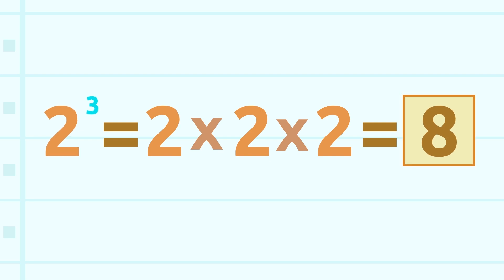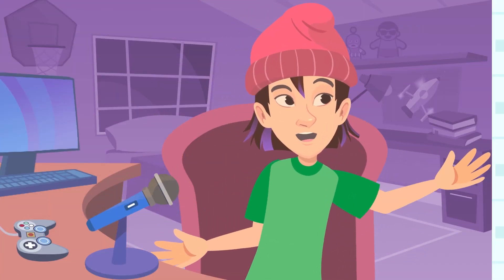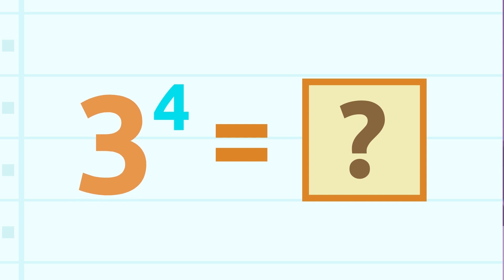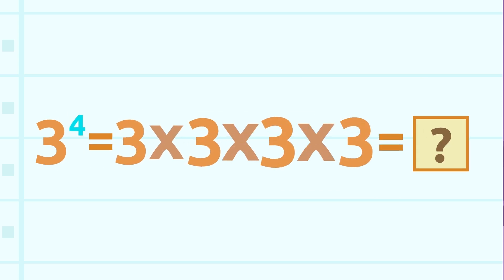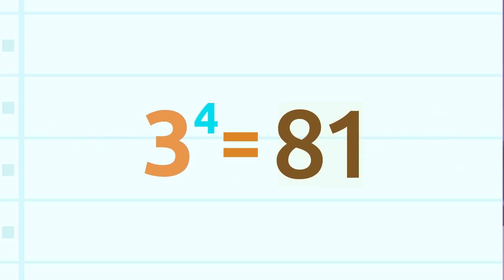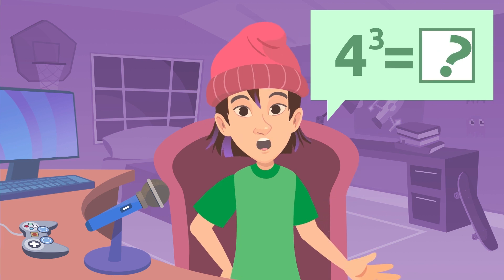The result of this multiplication is called the power. Let's look at another example: three to the power of four. We multiply three by itself four times. Three times three is nine, nine times three is twenty-seven, and twenty-seven times three is eighty-one. Three to the power of four is eighty-one. Now, would you like to try one yourself? Calculate four to the power of three.